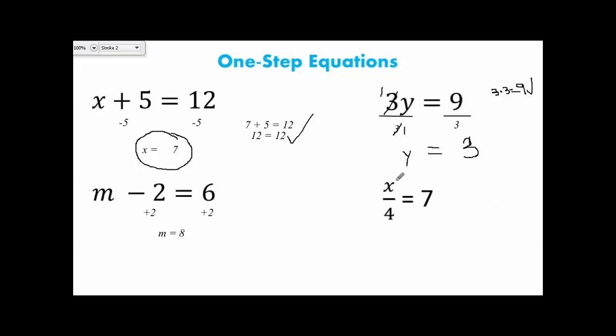Down here at the bottom, we have this fraction, and a lot of people get nervous with fractions, but remember fractions are just division. So this says x divided by 4 equals 7. The opposite of division is to multiply, so I'm going to multiply both sides by 4, or 4 over 1. It means the same thing.